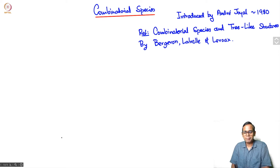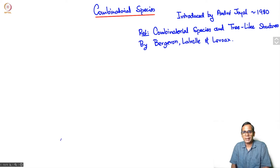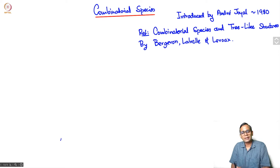The main reference, a very comprehensive reference on the topic, is the book by Bergeron, La Belle and Leroux called 'Combinatorial Species and Tree-like Structures.' A prototype for a combinatorial species is what we have already seen: the permutations.